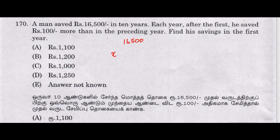So the first year he saved X, the second year X plus 100, the third year X plus 200 — each year 100 rupees extra. Find the savings in the first year.